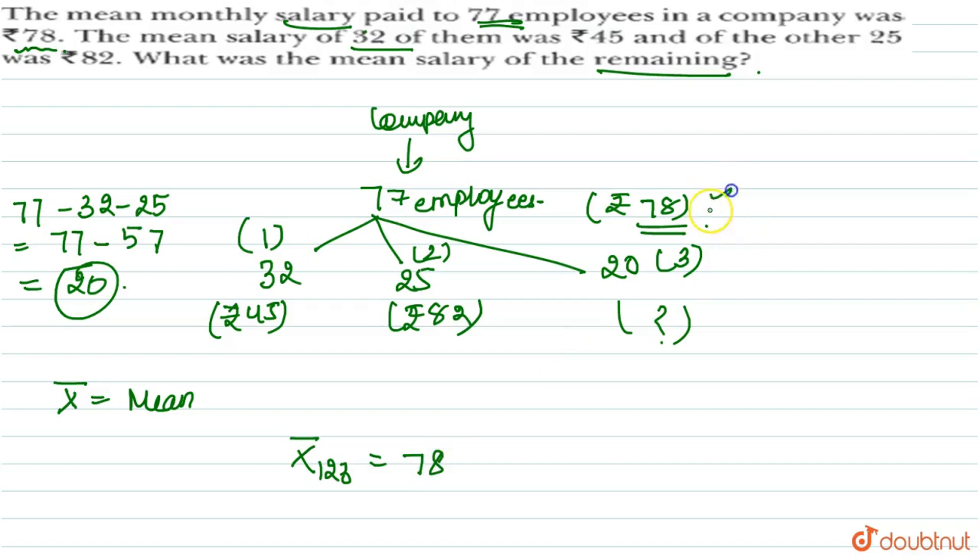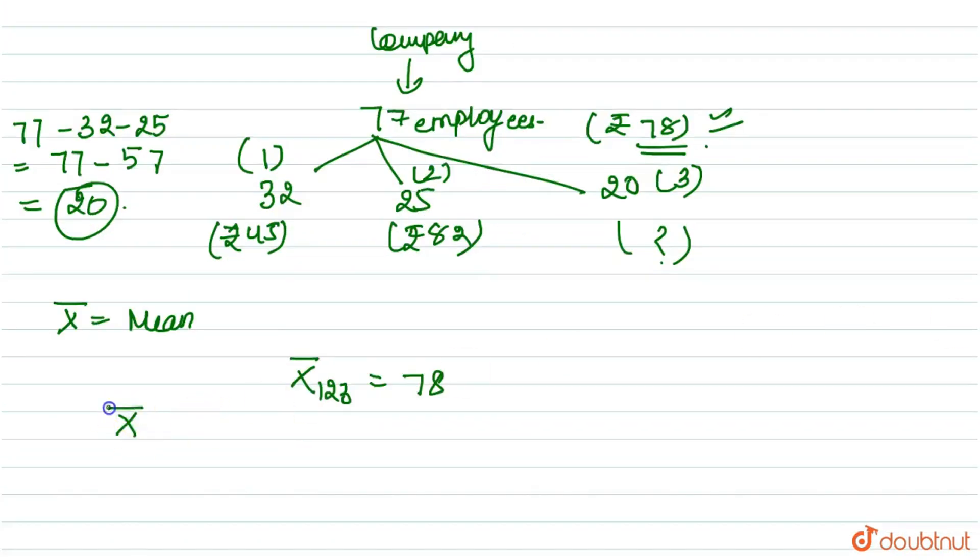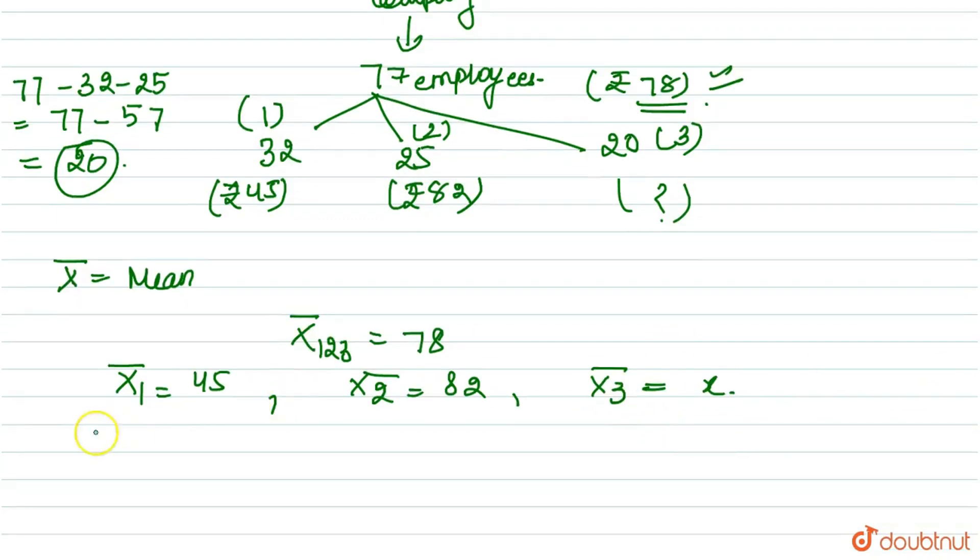The mean is 78. So, we have x bar 1, how much is mean of 32 employees? 45. Mean of 25 employees? 82. And mean of 20 employees? We don't know, let's call it x. And 32 employees, we refer to total number of employees as n. How much is n? 77. If this is 1, n1 is how much? 32. n2 is how much? 25. And n3 is how much? 20.